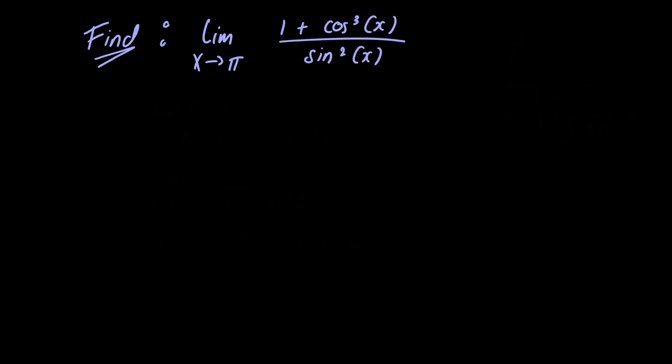Hi everyone. In this video we're going to figure out what the limit is as x approaches pi of 1 plus cosine cubed of x divided by sine squared of x. If we were to just go ahead and let x equal pi, we would be dividing by 0 because sine squared of pi is equal to 0. So we need to try and rewrite this limit into a form that allows us to let x equal pi.